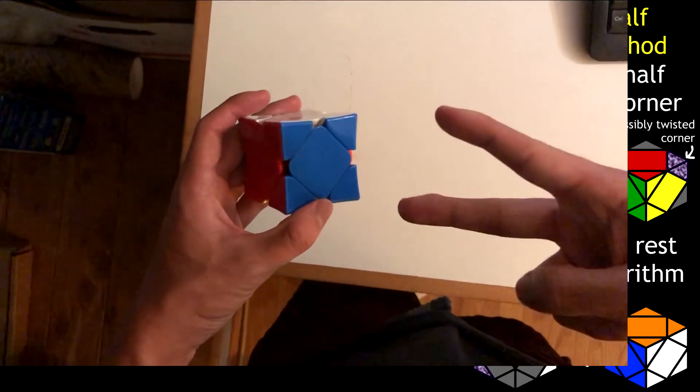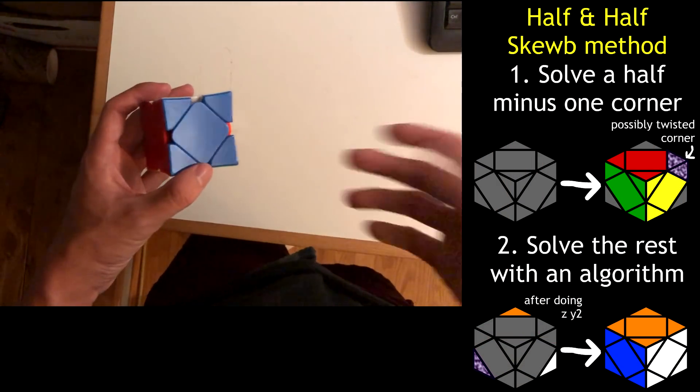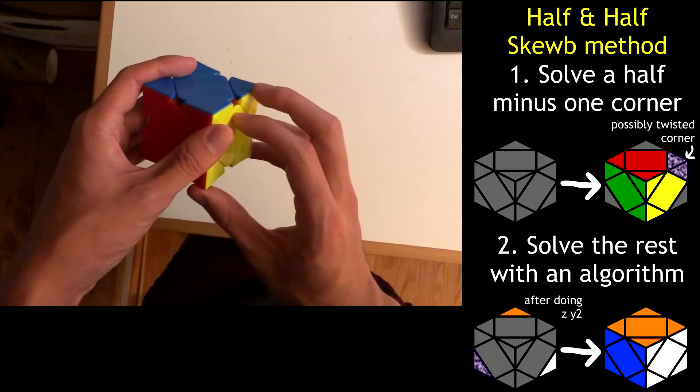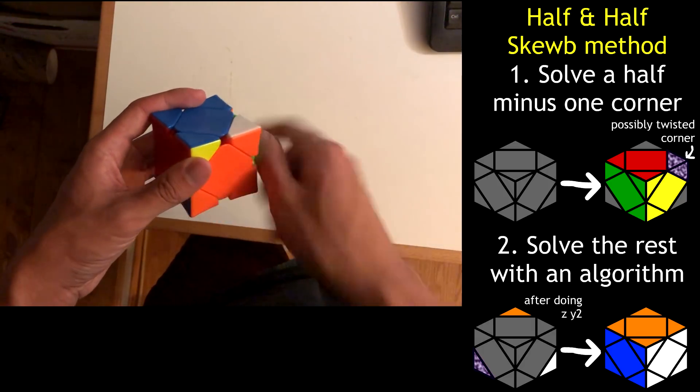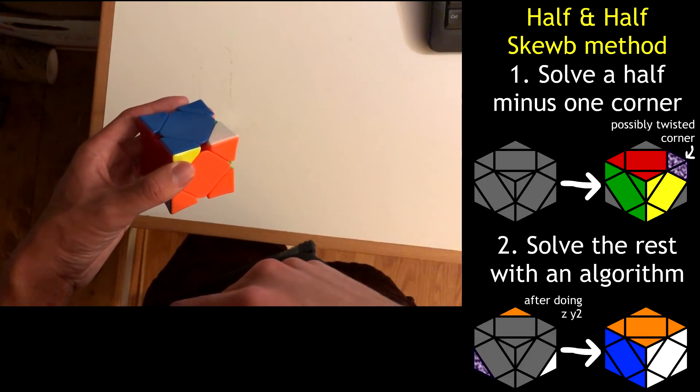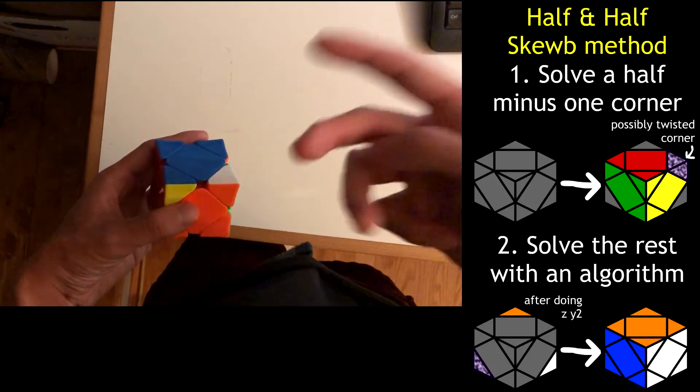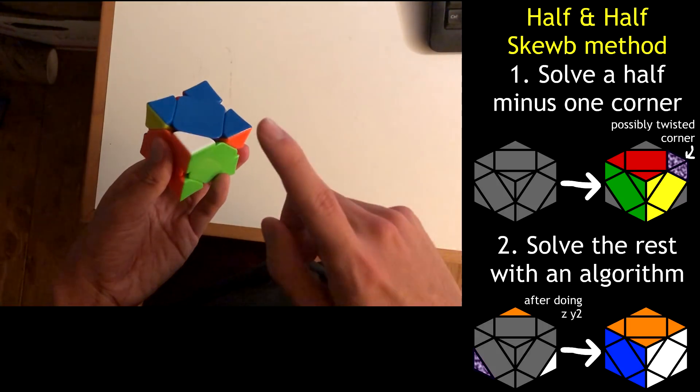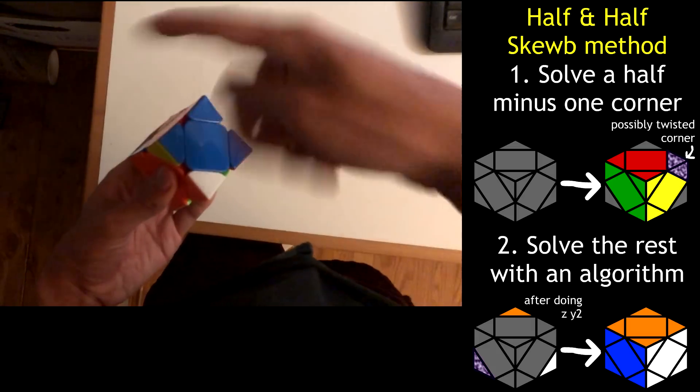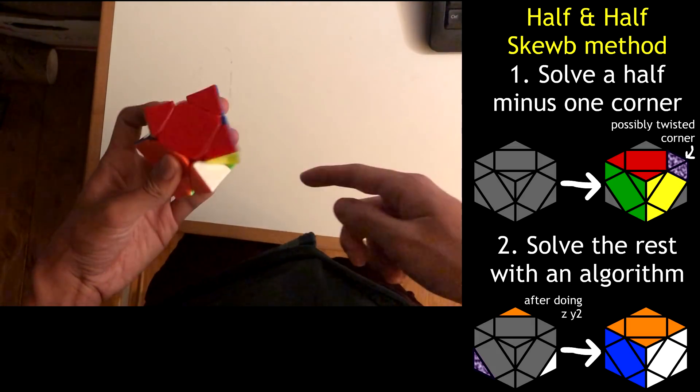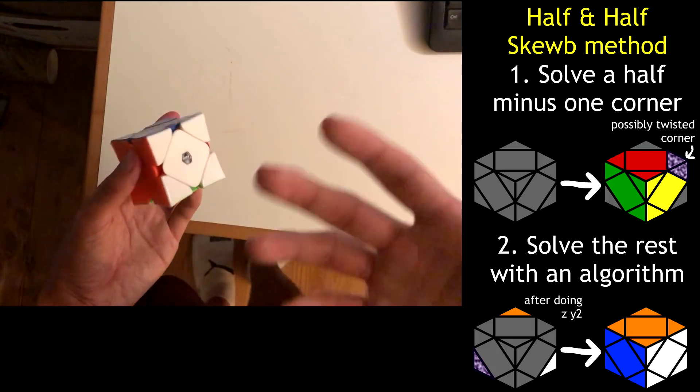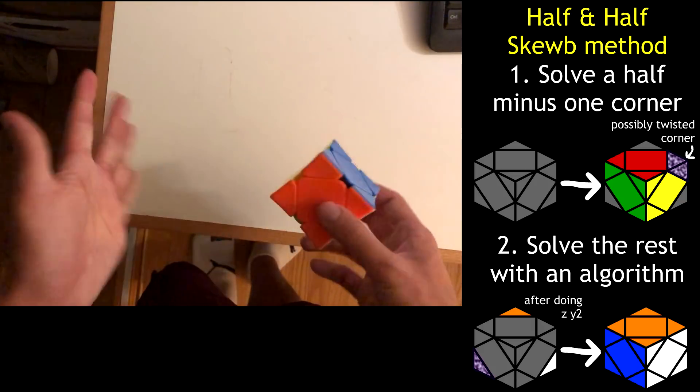Okay, here's the exact two steps of my method, which I call half and half. Step one, intuitively solve half of a SCUBE minus one corner. Step two, use one algorithm to solve that corner plus the entire other half of the SCUBE. That might make step two sound daunting, but I can explain why it's actually not so daunting.